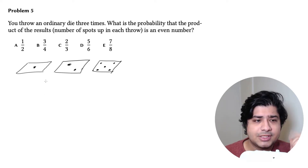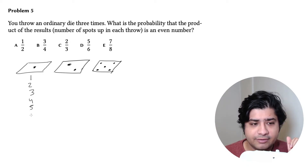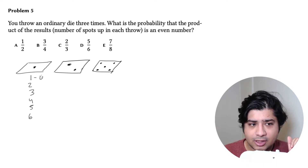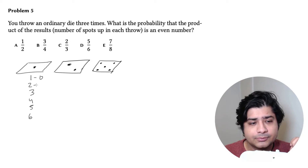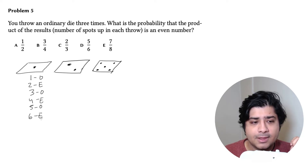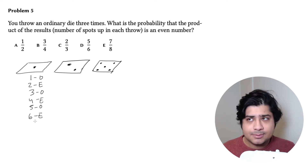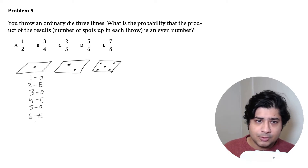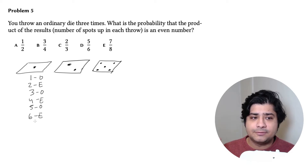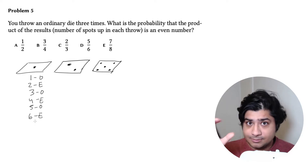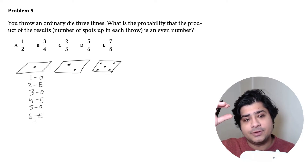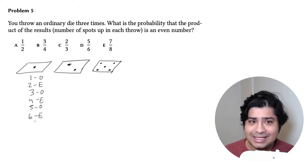Let's write those down: one, two, three, four, five, and six. One is odd, two is even, three is odd, four is even, five is odd, six is even. So you have six possibilities for each die, and half of them are odd and half of them are even.